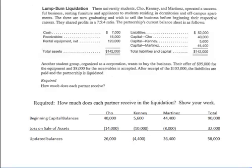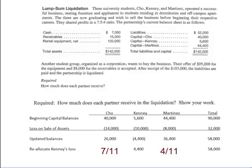We now need to take the loss of $4,400 and allocate it to Cho and Martinez. Because Kenny can't absorb the loss — Kenny doesn't have enough capital account — the loss has to be taken by Cho and Martinez. You're not going to split it equally; you've got to go back to their profit and loss sharing ratios. But notice Kenny's not here anymore, so all that matters now is that Cho was a 7 and Martinez was a 4. Add 7 and 4, you get 11. Cho has to take 7 elevenths of the loss and Martinez 4 elevenths.